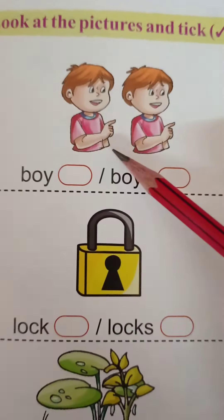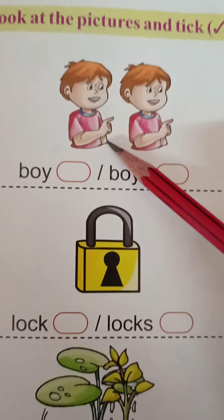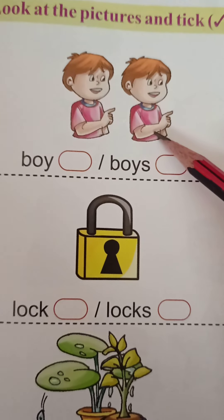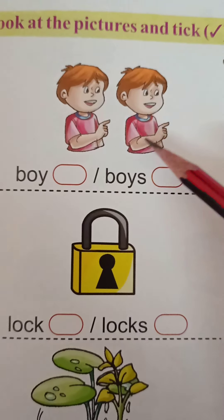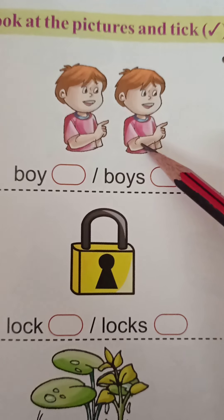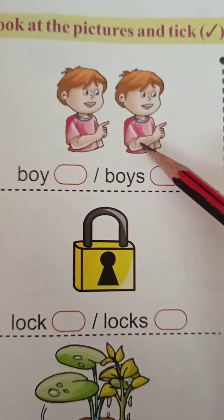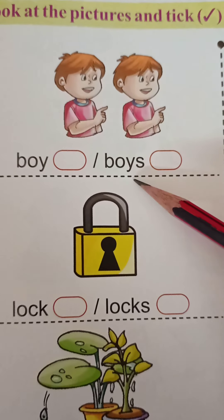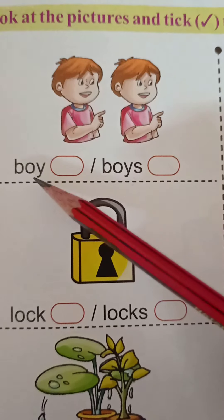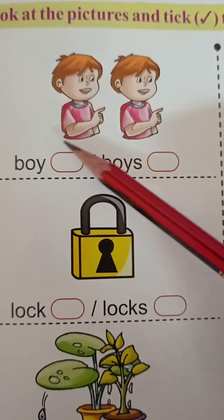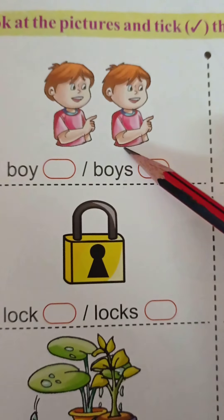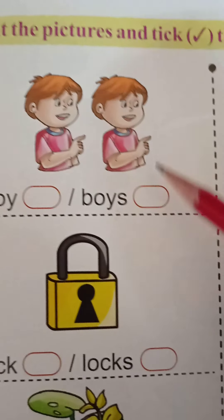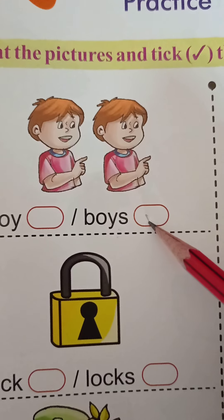How many boys? One and two — more than one. Many. So, many boys. If there is one, it's one boy. More than one, many boys. So, where do you tick? Yes.